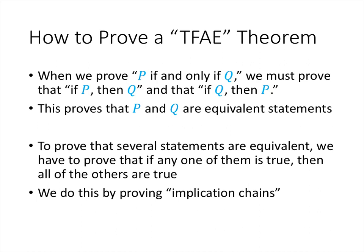Here, when we have 12 statements that we want to prove are all equivalent, we have to prove that if any one of them is true, then all the others are true. The way we're going to do that is by proving several if-then statements that give us what we call implication chains. If you think of an if p then q as being an arrow, we're going to prove that there's an arrow from any one of the 12 statements to any of the other 12 statements.